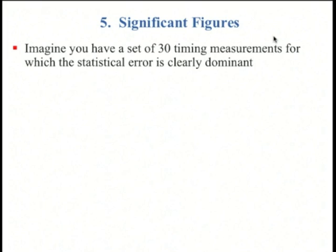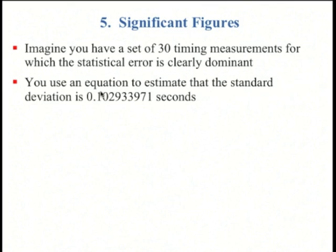Let's start with an example. We have a set of 30 timing measurements, and it's clear that the statistical error is dominant. So every time we measure a thing, we get a different answer, plus or minus about 0.1 seconds. We use those 30 measurements that we get, and we have that equation for standard deviation. We plug it all in to Excel or something like that, and we get 0.102933971 seconds as the computed estimate for the standard deviation.